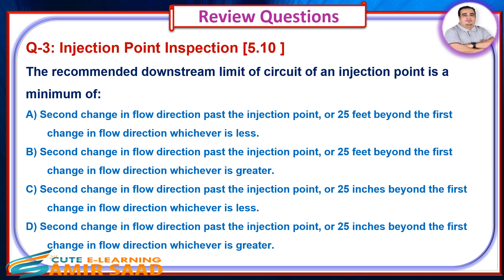Review Question 3: The recommended downstream limit of the circuit of an Injection Point is a minimum of — Answer is A.